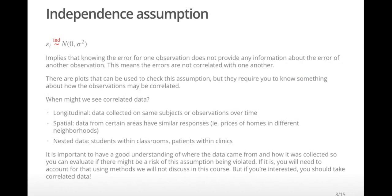When there is a violation of the independence assumption, that means there is some underlying correlation structure in the errors that needs to be accounted for. Although there are plots that can be used to check for certain types of correlation, they require you to know something about the underlying structure. So, we will just be cognizant of when we might run into these scenarios.